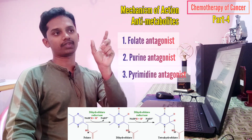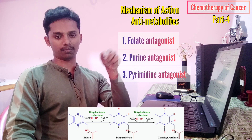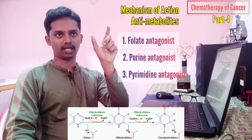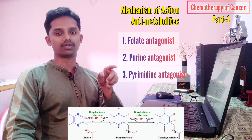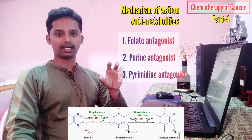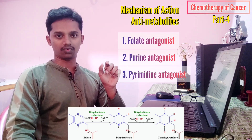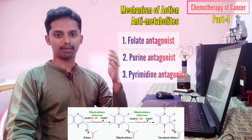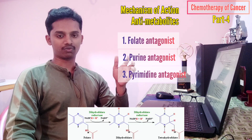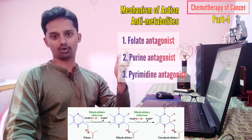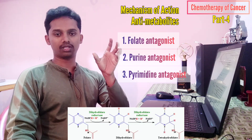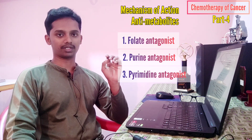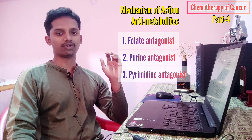So the folate antagonist methotrexate blocks the dihydrofolate reductase enzyme. Therefore, dihydrofolate will not be converted to tetrahydrofolate, and the tetrahydrofolate level will be reduced. That's why DNA synthesis will be reduced, cell replication will be reduced, and the cell will eventually die. This is the mechanism of methotrexate.